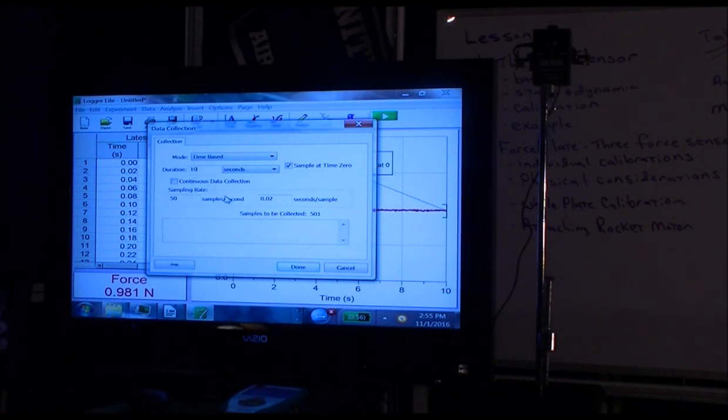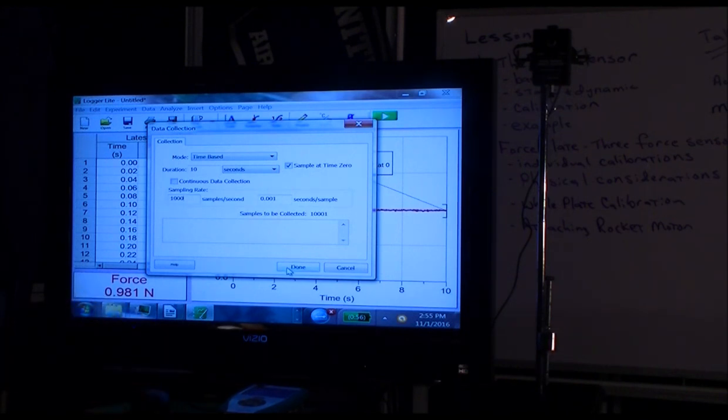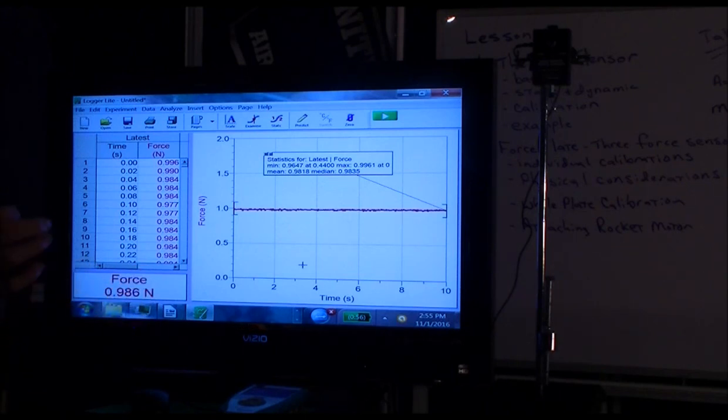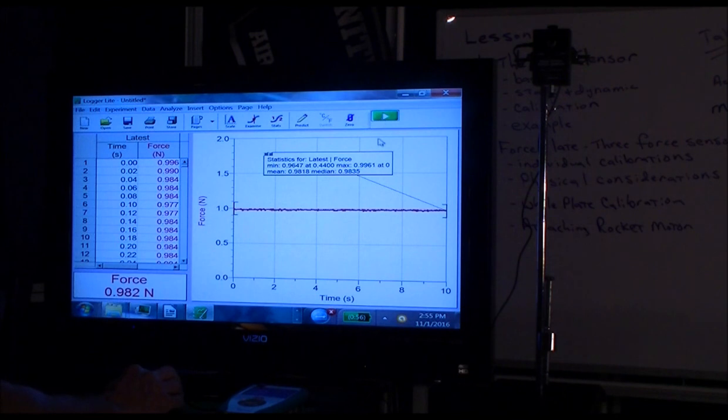So why don't we go ahead and let's sample for 10 seconds still. But why don't we raise our sample rate to 1,000 samples per second. And so it's going to sample at 1,000 samples per second for 10 seconds. And that's going to be 10,000 samples total. Which is hard if you were doing all that with pencil and paper. But computers are real great at this. And then let's hit collect.